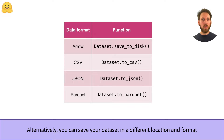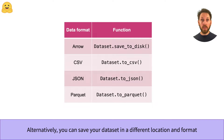But in many cases you'll want to save your dataset in a different location or format. As shown in the table, the datasets library provides four main functions to achieve this. You're probably already familiar with the CSV and JSON formats, both of which are great if you just want to quickly save a small or medium sized dataset.